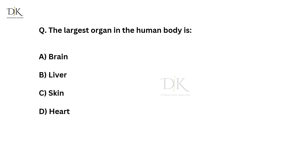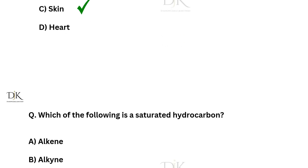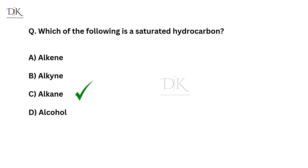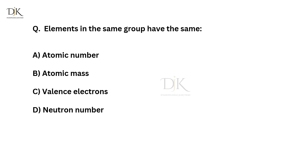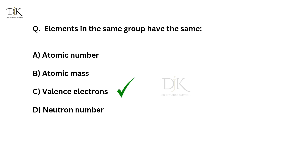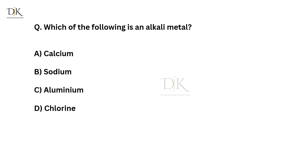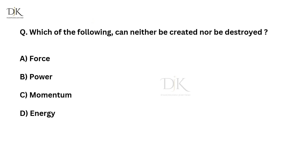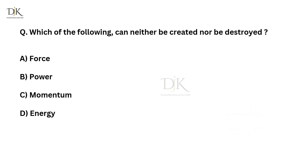The largest organ in the human body is? The right answer is skin. Which of the following is a saturated hydrocarbon? The right answer is alkane. Which of the following is an alkali metal? The right answer is sodium. Which of the following can neither be created nor destroyed? The right answer is energy.